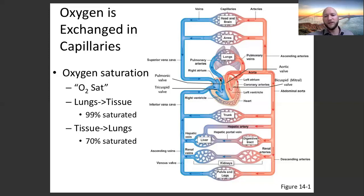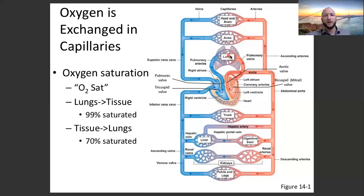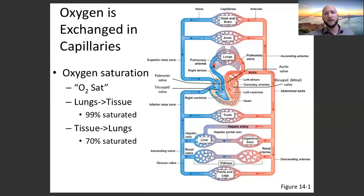An artery takes blood away from the heart; a vein takes blood back to the heart. Pulmonary arteries take blood away from the heart towards the lungs. At the pulmonary capillaries, CO2 leaves the bloodstream and oxygen enters. Once blood goes through these capillaries and into the pulmonary veins, we have high oxygen saturation again. Pulmonary veins: high oxygen saturation; systemic veins: low oxygen saturation; pulmonary artery: low oxygen saturation; aorta and other arteries: high oxygen saturation.